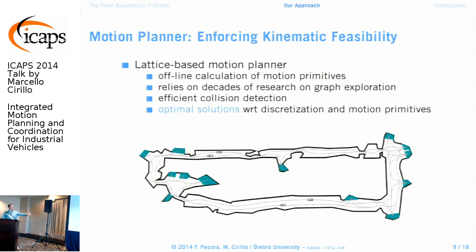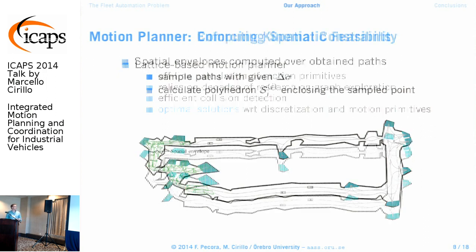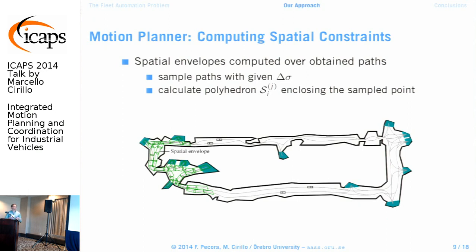We have a lattice-based motion planner with many desirable properties that can handle kinematically feasible motions very fast within a given map. Since we do not want to stick to specific paths, we sample those paths and create polyhedra over them that overlap to form spatial envelopes of trajectories, constraining where the vehicle should move. Once we have these polyhedra, we simulate a run of the vehicles and get a first approximation of the temporal profile, determining when each vehicle would enter and exit each polygon at minimum and maximum speeds.